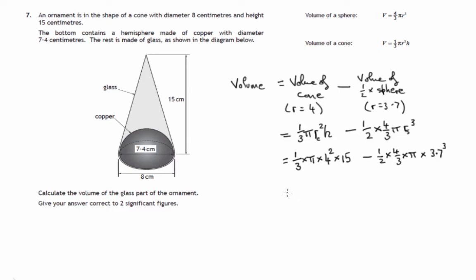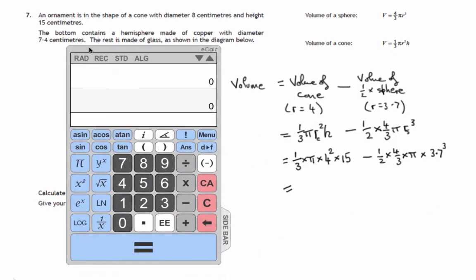Well, let's find out what that comes to. And we can use the calculator to find that. So first of all, 1 third, 1 divided by 3, multiplied that by pi, times 4 squared, times 15.